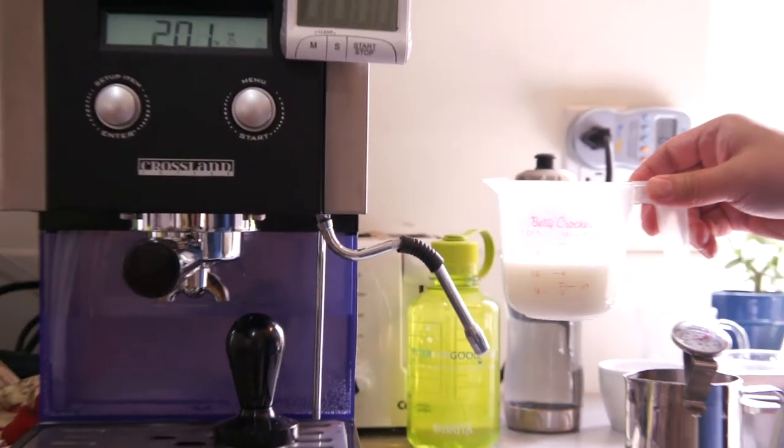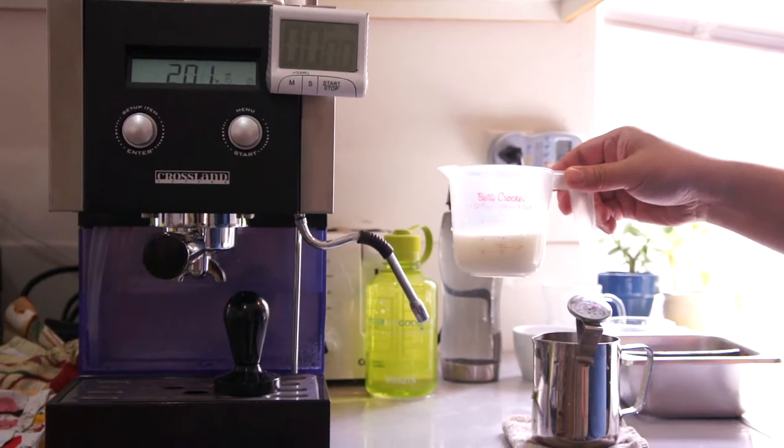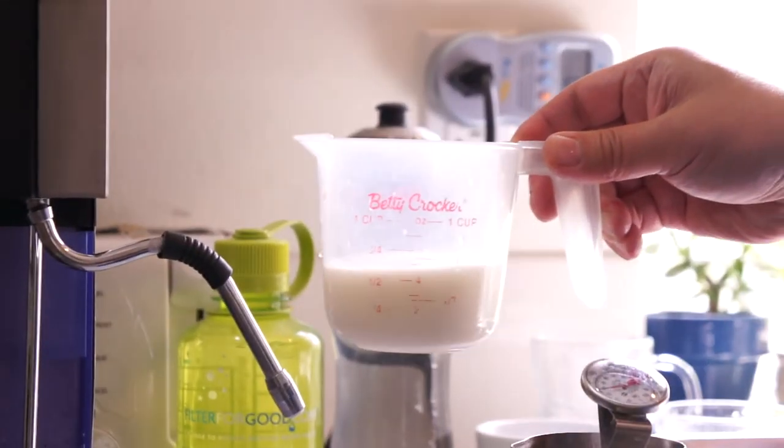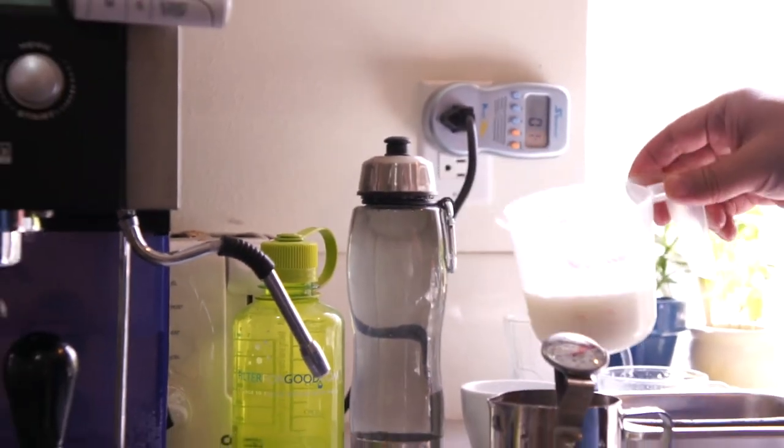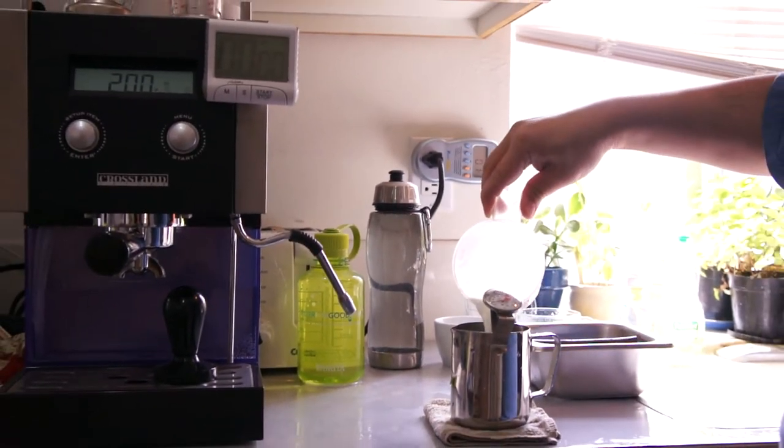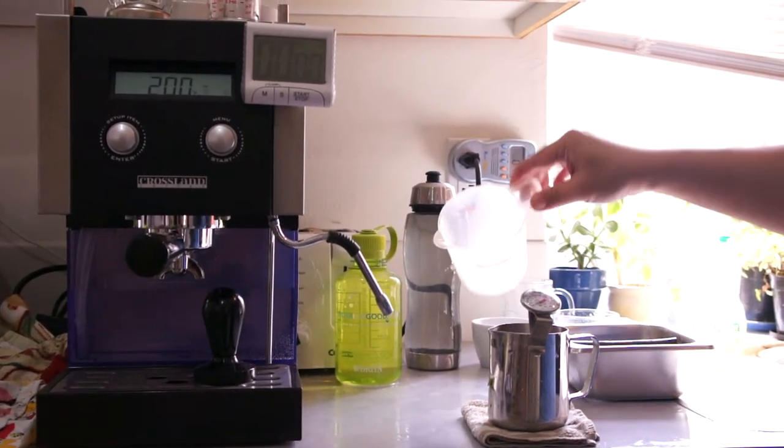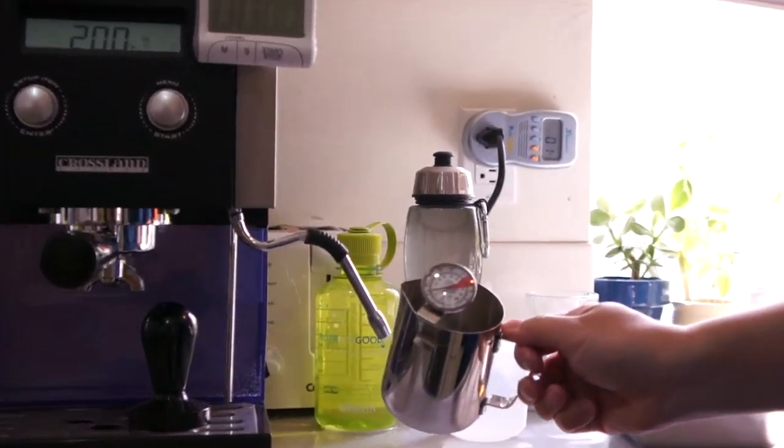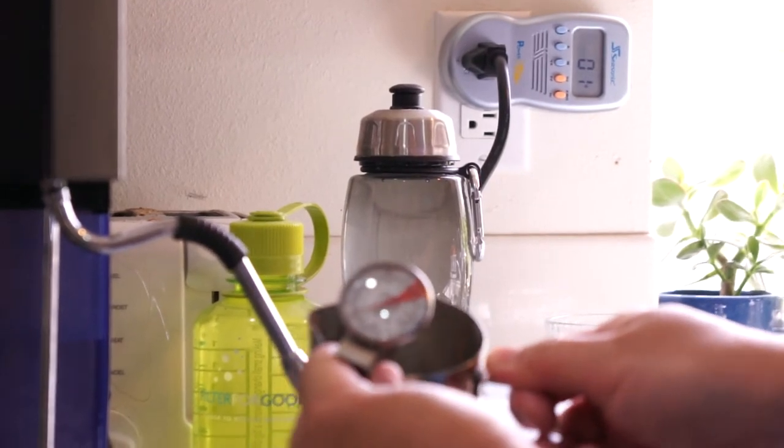So, we're here with the Crossland CC1 machine, and I just poured from the refrigerator 5 ounces of 1% low-fat milk, and we're going to see how long it takes to steam this from wherever it rises at. This looks like it's about 42 degrees.